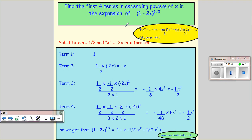I'm going to find the first four terms in ascending powers of x for this expansion here. Now, the key to doing these is really just to work out what you've got to substitute in. So my power is a half and my x value is the minus 2x.